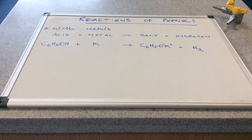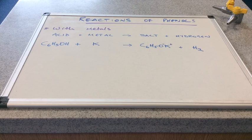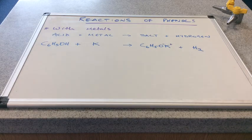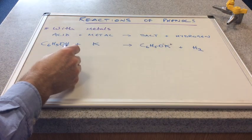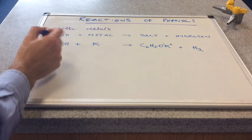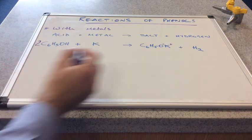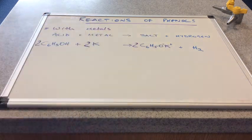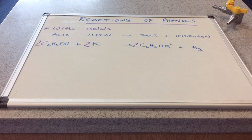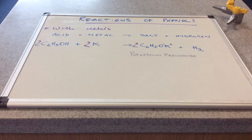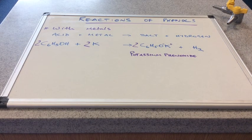So what is going to be the name of this? Oh, I've just noticed something about this equation. It's not balanced, is it? So we need to sort that out. So obviously we've got two hydrogens here. We've only got one there. So we need a 2 there, which means we need a 2 there, which means we need a 2 there. I knew it wasn't balanced at the start, you know. Right. So what's that going to be called? Have a think and I'll pop the name up. So obviously that's called potassium phenoxide.